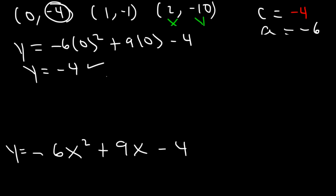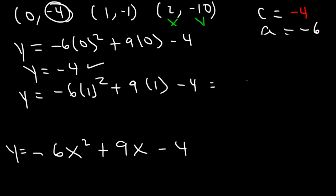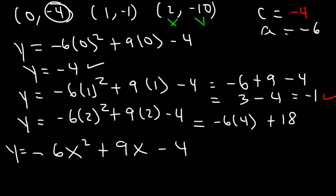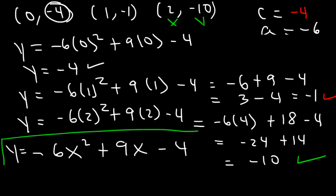Checking point (1, -1): negative 6 times 1 plus 9 times 1 minus 4 equals negative 6 plus 9 minus 4 equals negative 1. That works. Checking point (2, -10): negative 6 times 4 plus 9 times 2 minus 4 equals negative 24 plus 18 minus 4 equals negative 10. That works too. So this is indeed the quadratic equation in standard form.